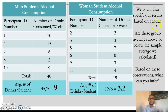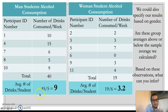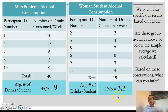We could also specify our results by gender. The left table shows the number of alcoholic beverages consumed by students who identify as men, and the table on the right shows alcohol consumption of students who identify as women. We had five male participants who consumed a total of 45 drinks — 45 divided by 5 equals 9. We had six individuals who identified as women, and they consumed 19 drinks that week, so 19 divided by 6 gives us an average of 3.2. Male students consume almost three times as many alcoholic beverages as women in our sample.